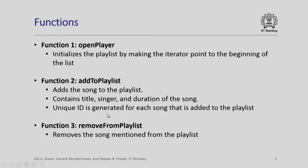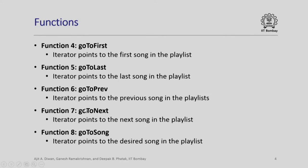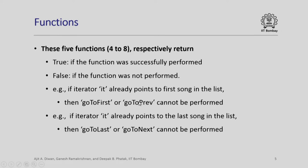There will be a function to remove from the playlist in which case a particular song will be removed. These are various functions which will permit us to navigate through the playlist: go to first, go to last, go to previous, go to next, or go to a particular song. We have already seen this functionality and we will be writing individual functions to implement these. Please note that these five functions respectively return either true or false — true if the function is successfully performed, false if it is not performed properly.